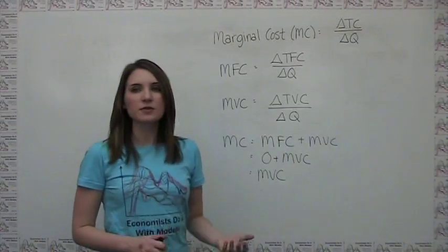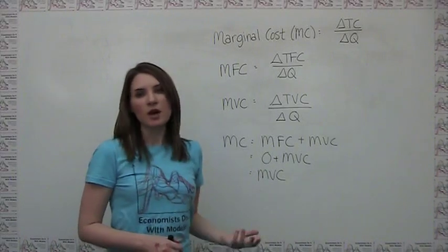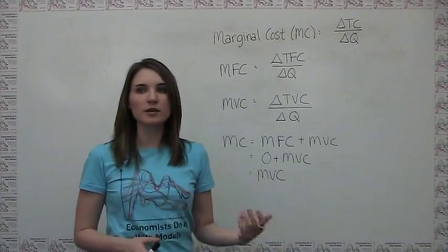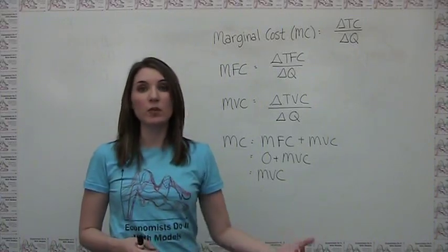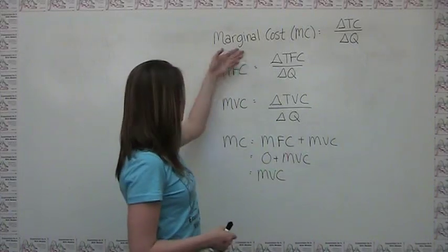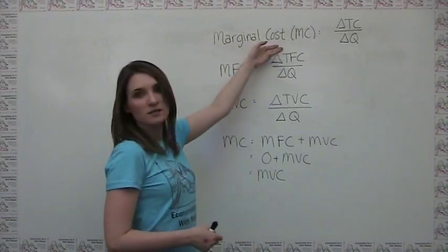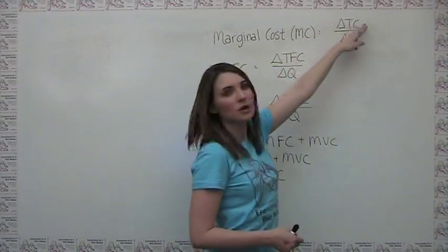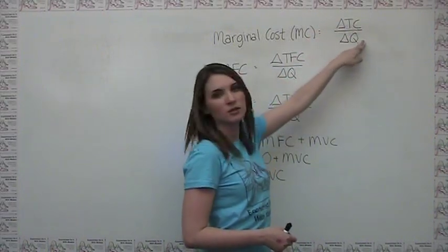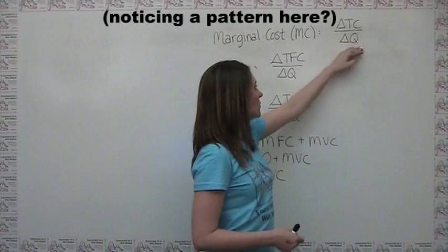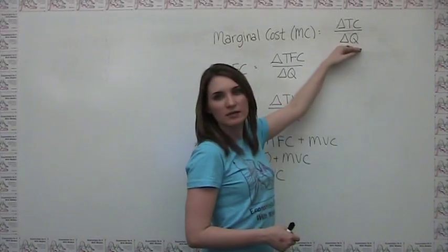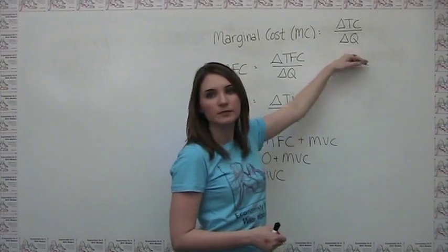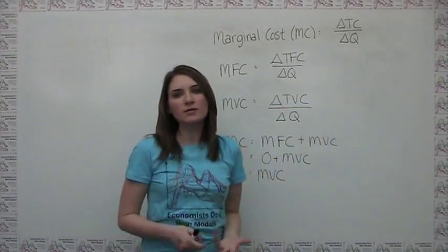As with revenue, marginal cost at a particular quantity is the additional cost that a firm must incur in order to produce one more unit of output. The marginal cost, abbreviated MC, is just equal to the change in total cost divided by the change in quantity. When we're dealing with discrete units, this change in quantity is usually one unit.